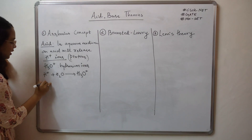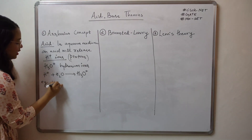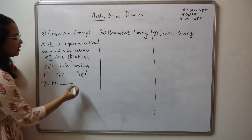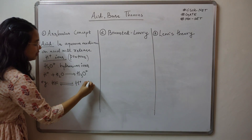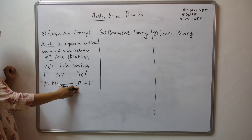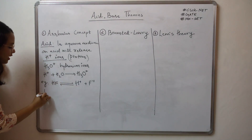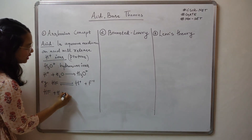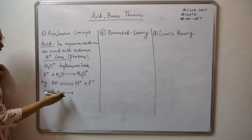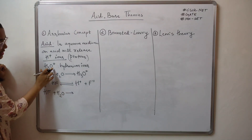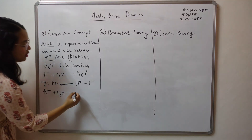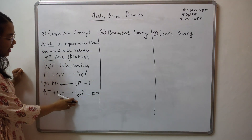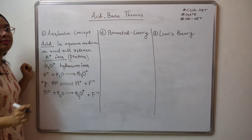Let us take a simple example: HF, hydrofluoric acid. When HF dissociates in water it will split into H+ plus F minus, so it is releasing a proton. I can show the same reaction in the presence of water: HF plus H2O. HF is going to split into F minus and H+. That H+ will associate with water, giving us H3O+ plus F minus. This is why we get a hydronium ion in the aqueous medium.